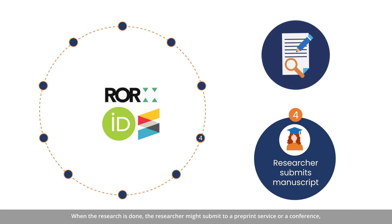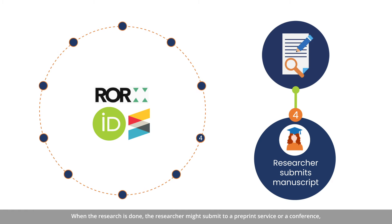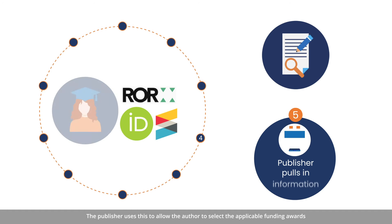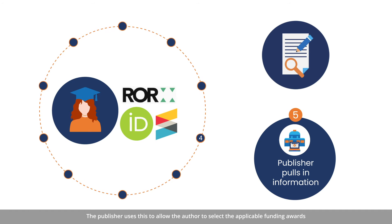When the research is done, the researcher might submit to a preprint service or a conference, share their data in a repository, and submit a manuscript to a journal for publication. In that case, they include their ORCID ID with their submission. The publisher uses this to allow the author to select the applicable funding awards and affiliations with just a click.